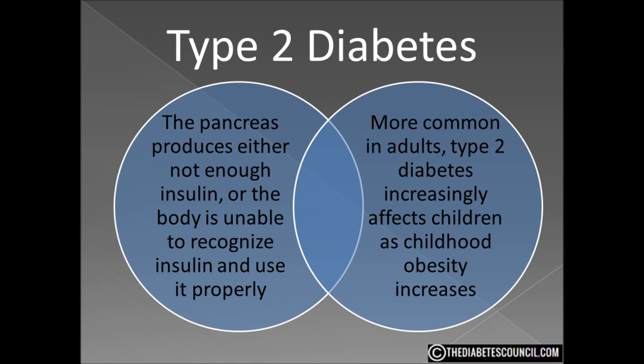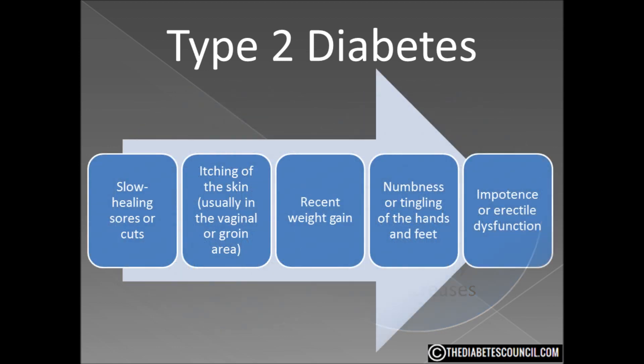The symptoms for type 2 are basically the same as for type 1 with a few additions: slow healing sores or cuts, itching of the skin normally in the groin area, recent weight gain, numbness or tingling in the hands or feet, and impotence or erectile dysfunction.